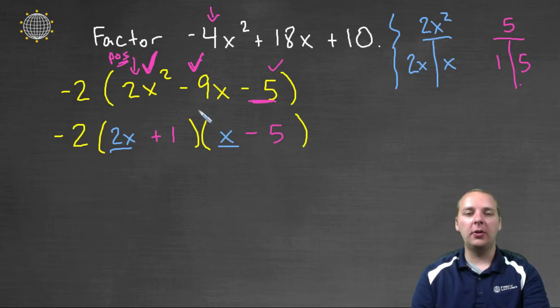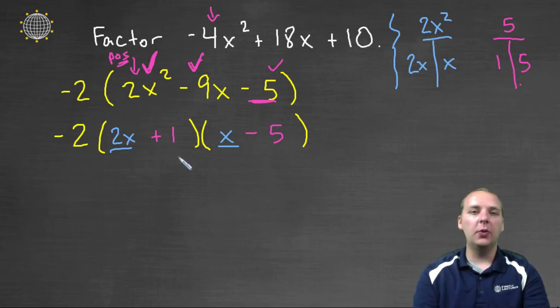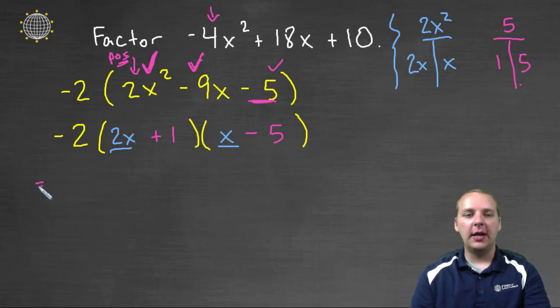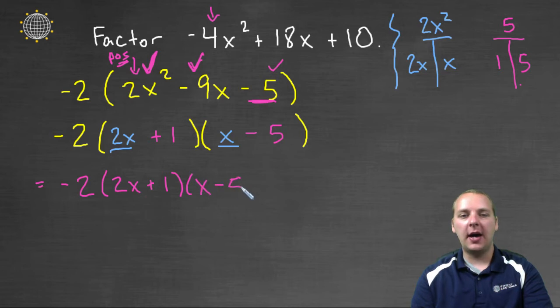So we've factored this polynomial here. If for some reason these guys did not multiply to -5, I'd have to keep searching and trying other options. But everything worked out. If you want to check this, you could foil this out just to make sure it gives you this quadratic. But in fact it does. So my answer would be -2 times (2x+1) times (x-5). And that will be the factorization of this trinomial up here.